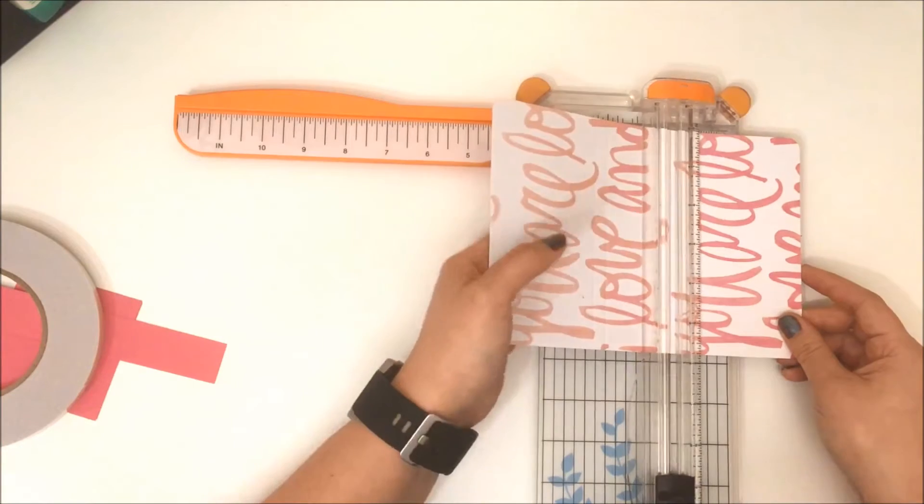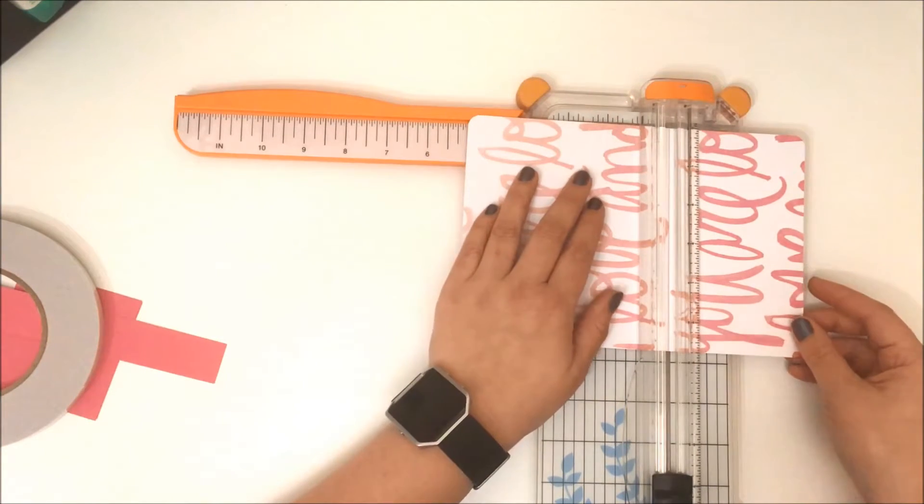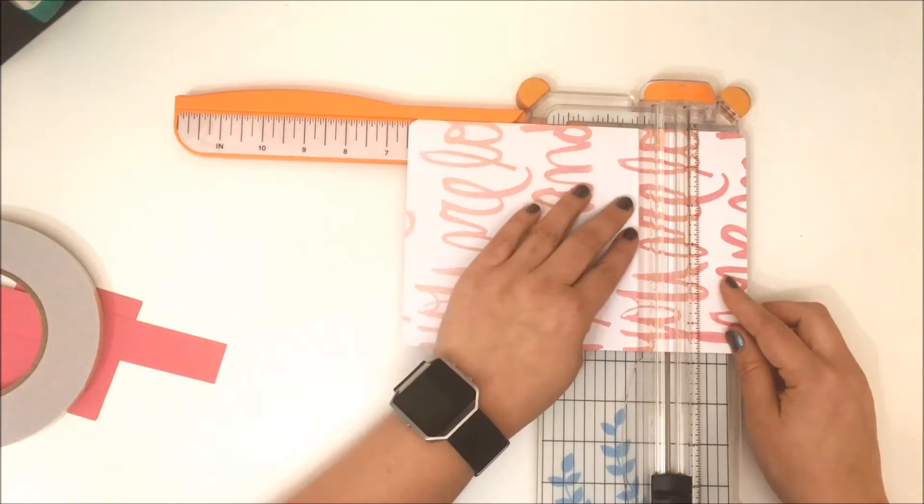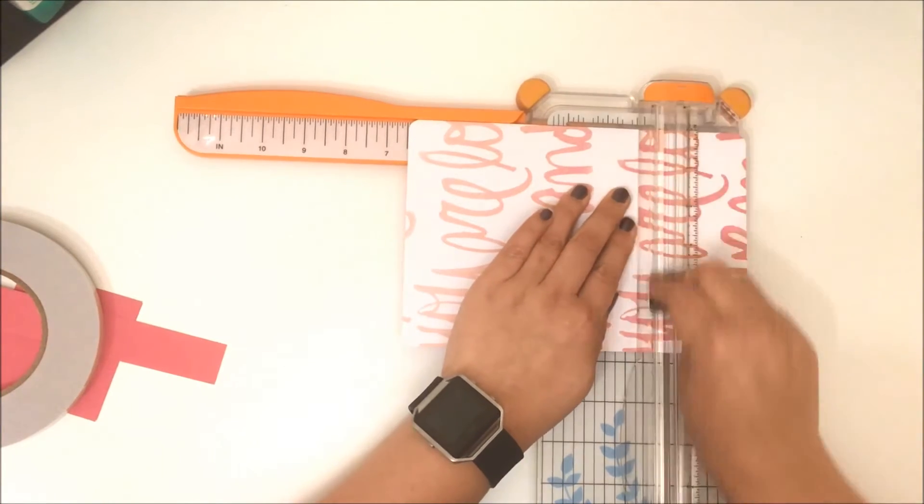Because my cardstock was double thickness, I ran the score tool along a couple of times just to get through both pieces of paper. If you're using a manual scoring tool or only had one sheet of paper, you wouldn't need to push down as hard.